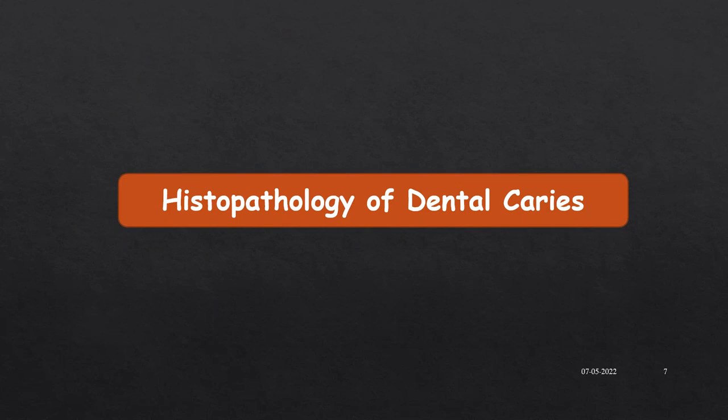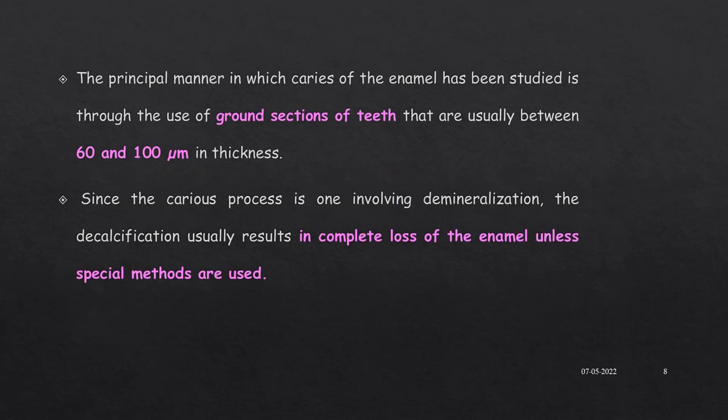Regarding histopathology of dental caries, the principal manner in which caries of enamel has been studied is through the use of ground sections of teeth that are usually between 60 to 100 microns in thickness. Since the caries process involves demineralization, decalcification usually results in complete loss of enamel unless special methods are used. So to study enamel caries, special methods are used when ground sections are prepared.